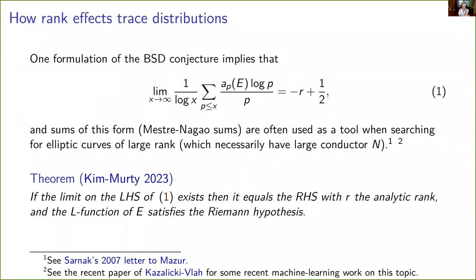There is a much more precise version of the BSD conjecture that involves many other invariants of the elliptic curve. But I just want to talk about the distributional properties of the Frobenius trace. One interesting question is whether, even if you don't know whether BSD is true, you might look at the Mester-Nagao sum and try to use it as a way to predict ranks. That is in fact the way most large-rank elliptic curves are found — by starting with a family guaranteed to have some excess rank and then looking for special examples. One way to detect them is to compute truncated versions of this sum. When you get a value that's looking more negative than you might otherwise expect, that's maybe an indication that there's excess rank.